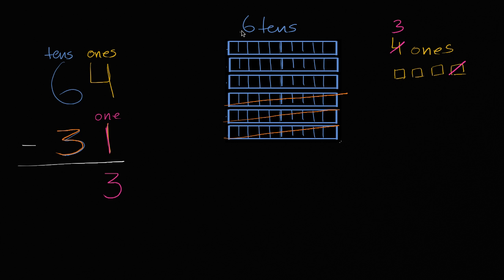Well, I'm gonna have left over just three tens. Just these three, these three right over here. So six tens minus three tens is three tens. And so 64 minus 31 is 33. Three tens and three ones.